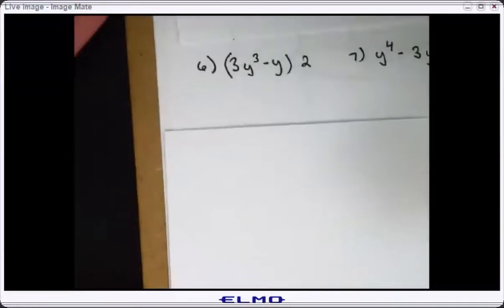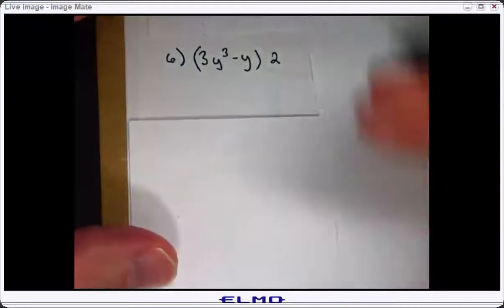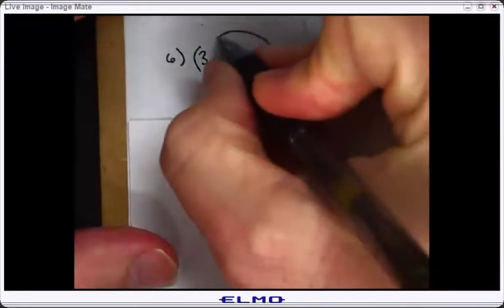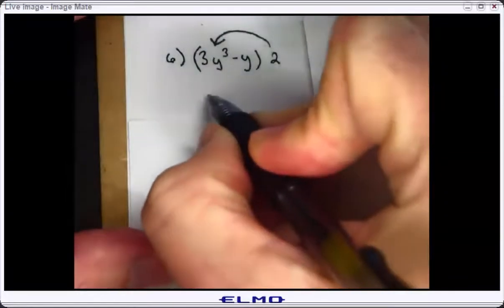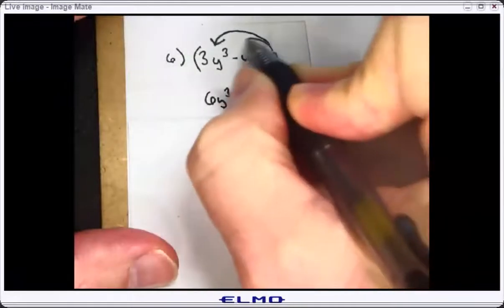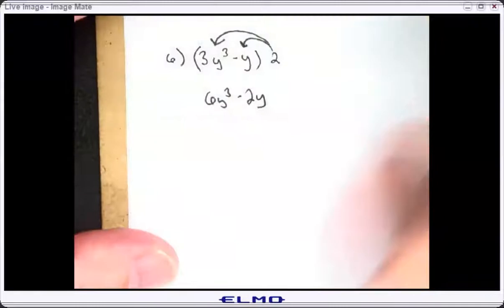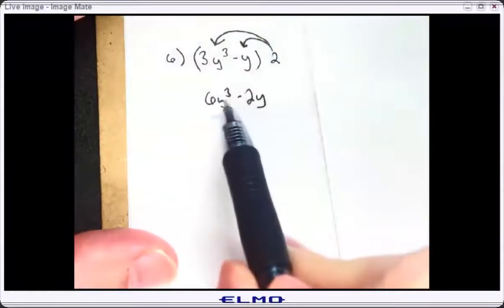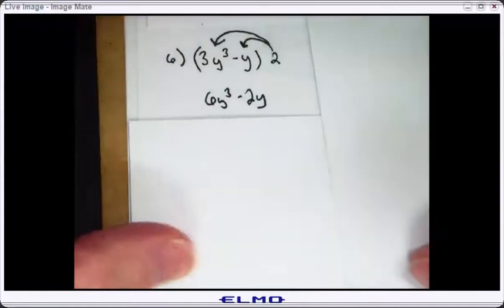Your distributor could be on the right side, like it is for number six. You still distribute two times both of the terms in parentheses. Two times three y cubed is six y cubed, and two times negative one y is negative two y. This is written correctly because you go in descending order of exponent — three, then one, then any constant if we have. So that is a correct answer.